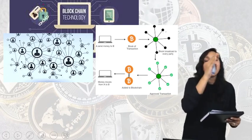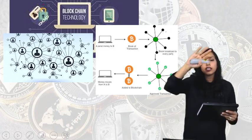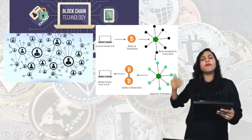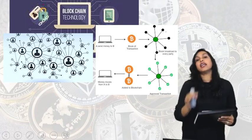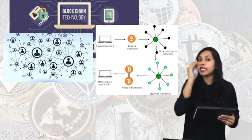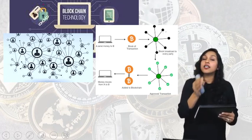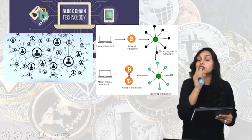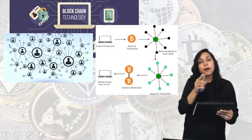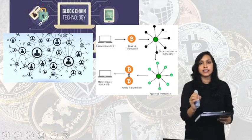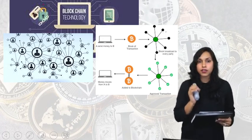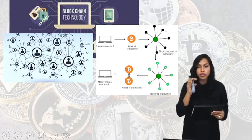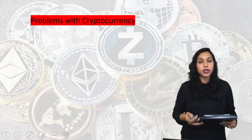For example, if A sends money to B — a block is generated, a transaction approval block is generated. If A has given five million dollars to B and someone wants to change that figure, they would have to change all the blocks, because each block contains the hash of the previous block. So every single block would need to be changed, which is practically not possible. Hence, blockchain technology is considered one of the most secure ways of protecting data — keeping data in a trustworthy manner without the need for a trusted third party.